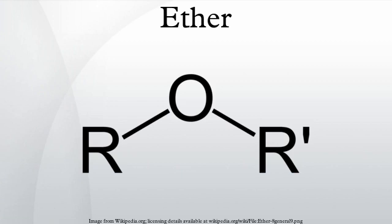However, the presence of two lone pairs of electrons on the oxygen atoms makes hydrogen bonding with water molecules possible. Cyclic ethers such as tetrahydrofuran and 1,4-dioxane are miscible in water because of the more exposed oxygen atom for hydrogen bonding compared to linear aliphatic ethers. The lower ethers are highly volatile and flammable, also act as anesthetics, and serve as good organic solvents.